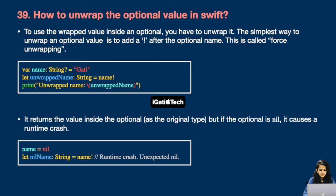Force unwrapping returns the value inside the optional as the original type, but if the optional is nil, it causes a runtime crash. If 'name' equals nil and you force unwrap that value, the app will crash at runtime with the exception: unexpected nil.